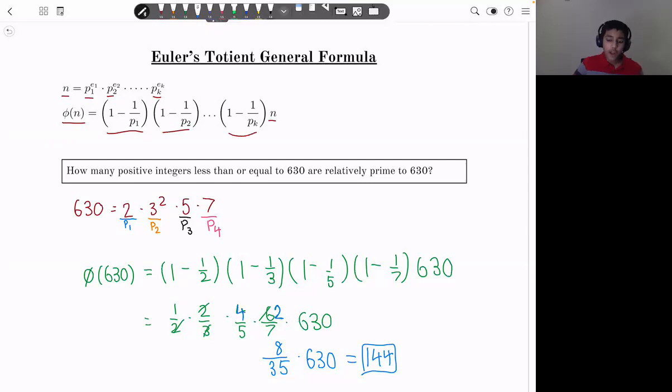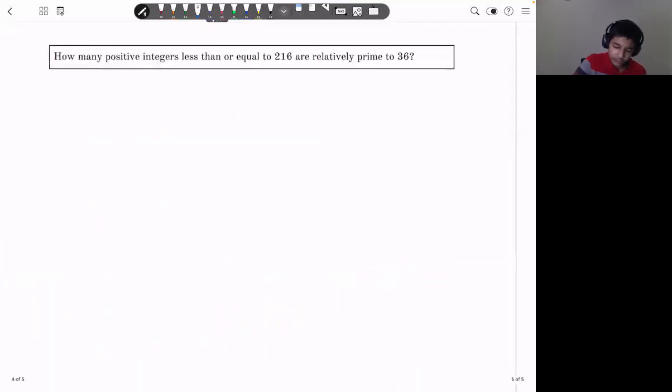So now we can try a hybrid of problems that's similar to Euler's totient, but it requires a similar technique, but we can't directly apply the formula. How many positive integers less than or equal to 216 are relatively prime to 36? 216 being the main difference here.